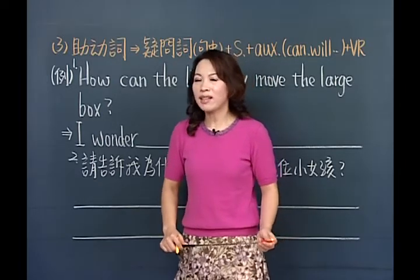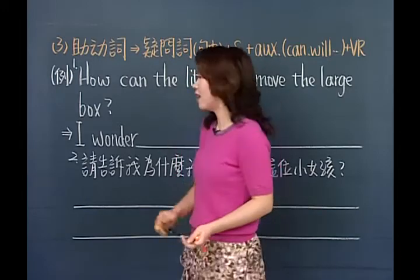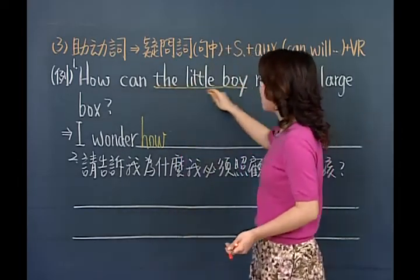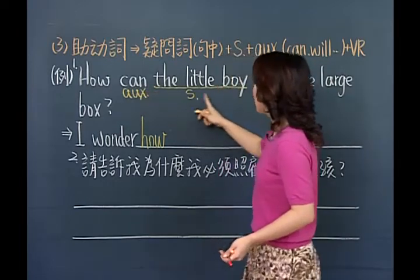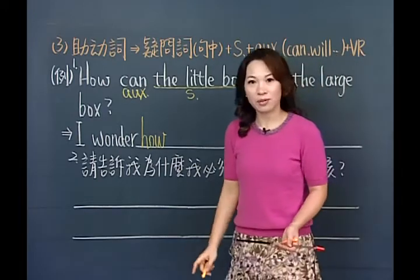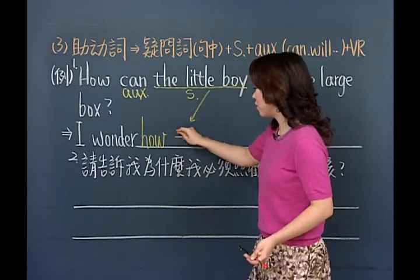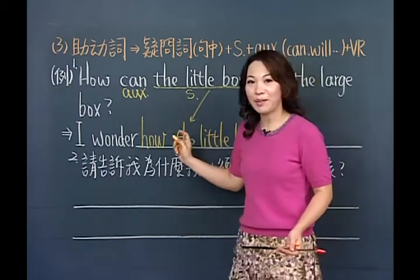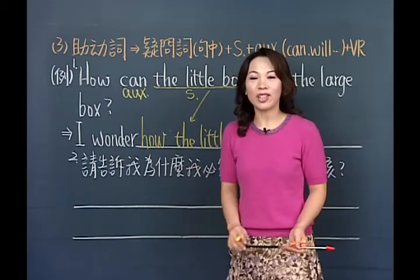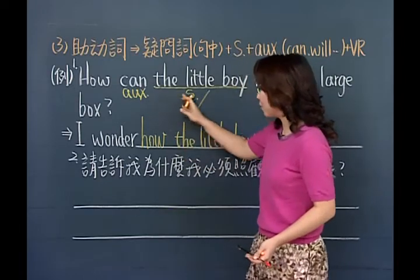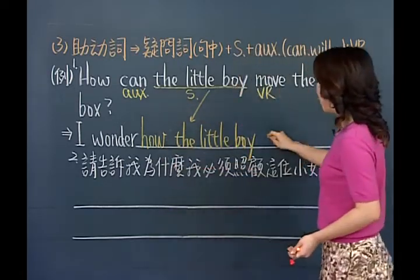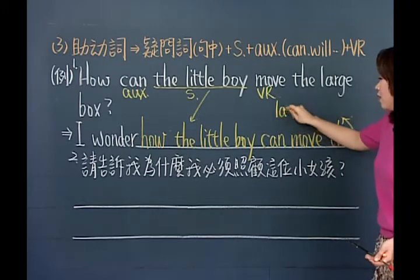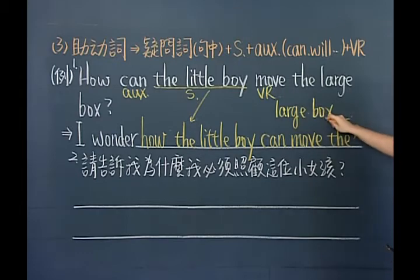没有问题的，我们把疑问词摆到句中：I wonder（我很怀疑）。还是一样疑问词摆句中，记得一定先看到主词。它的结构是：助动词加上主词加上后面原形动词。所以疑问词摆句中没有问题，先看到主词The little boy，然后助动词拿过来就对了。